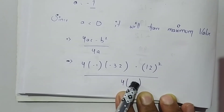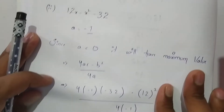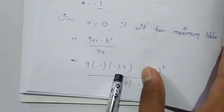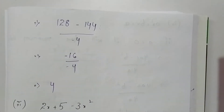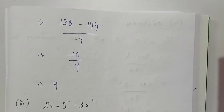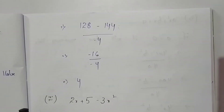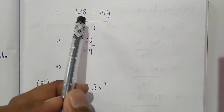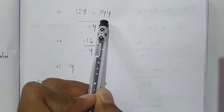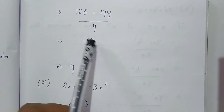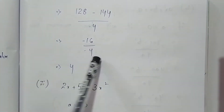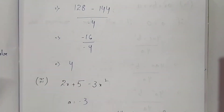4 × (-1) × (-32) gives 128, and 12² gives 144. So we have (128 - 144) / 4, which equals -16 / 4 = -4. So -4 is the maximum value of this expression.